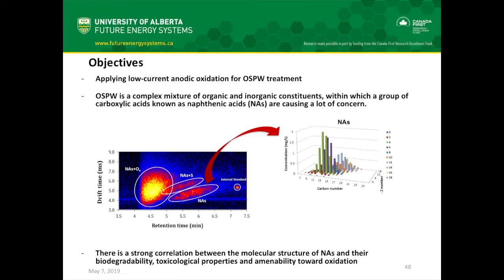This is part of research focusing on the application of anodic oxidation as a treatment option for oil sands processed water. OSPW is a complex mixture of different organics and inorganics. In order to evaluate the performance of any process for treating OSPW, we need to understand the selectivity and effectiveness based on structures. This ion-mobility spectrometry for a raw OSPW sample shows many different structures — even within each group of naphthenic acids, we have different compounds with different cyclicity and carbon numbers.